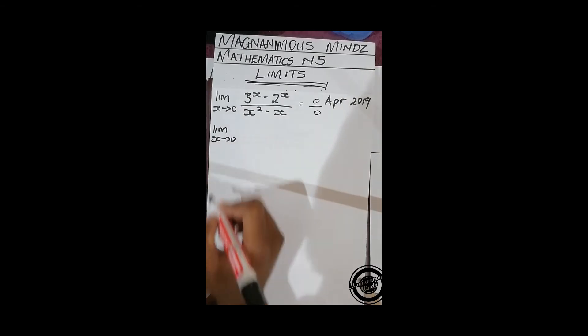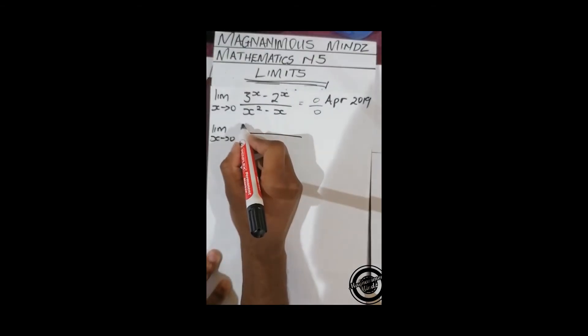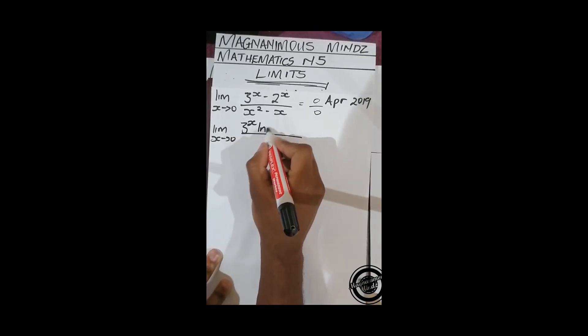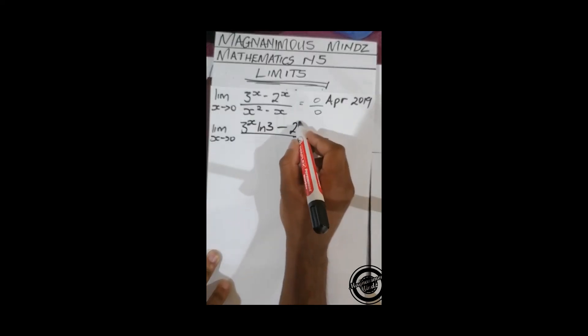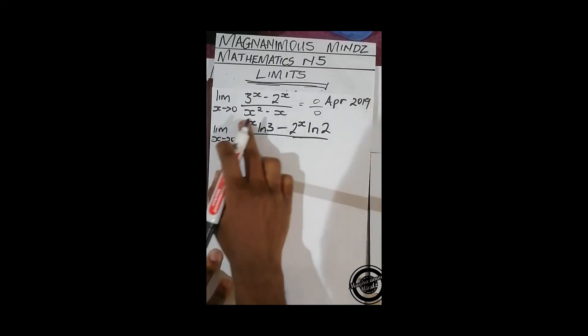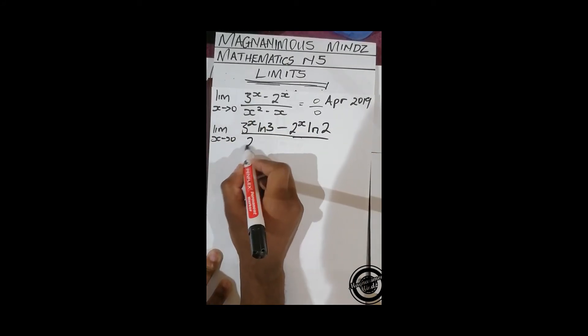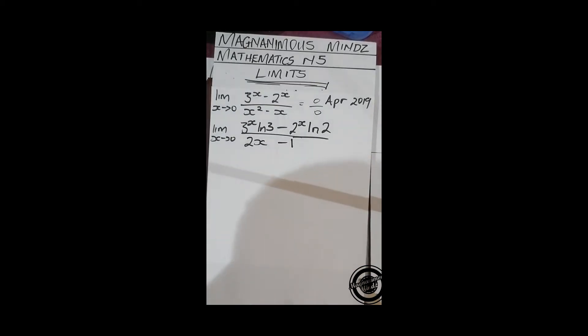We're going to get x approaching 0. If we differentiate this, it's going to give us 3^x ln(3) minus 2^x ln(2). And underneath here, we're going to get 2x minus 1.